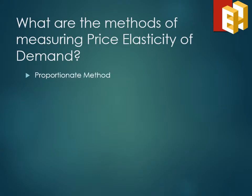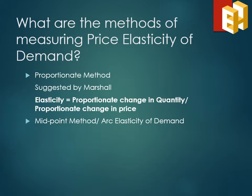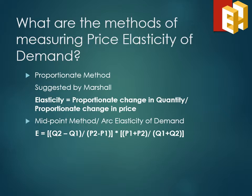It is important to know the various methods with which we can calculate the price elasticity of demand. First is the proportionate method, suggested by Alfred Marshall — the formula is elasticity equals the proportionate change in quantity demanded divided by the proportionate change in price. Second is the midpoint method, commonly known as arc elasticity of demand. This method uses the average of both prices and quantities in two periods and is given by the formula: (ΔQ / ΔP) multiplied by (P1 + P2) / (Q1 + Q2). This method is mostly used when the change in price is large.